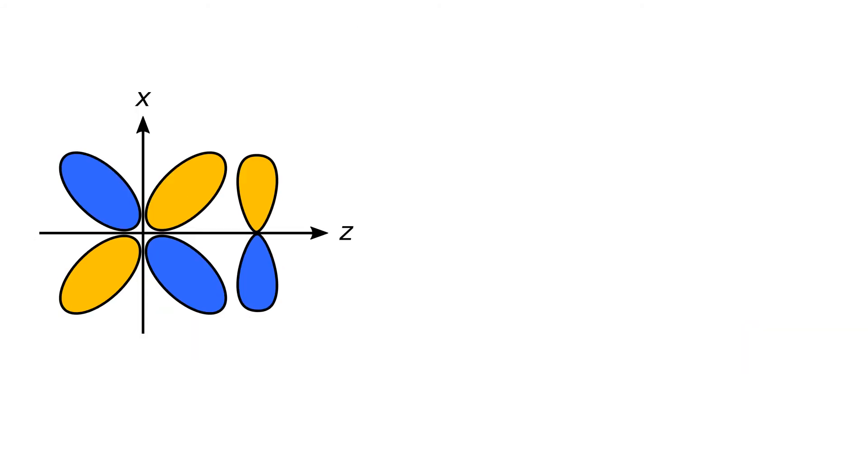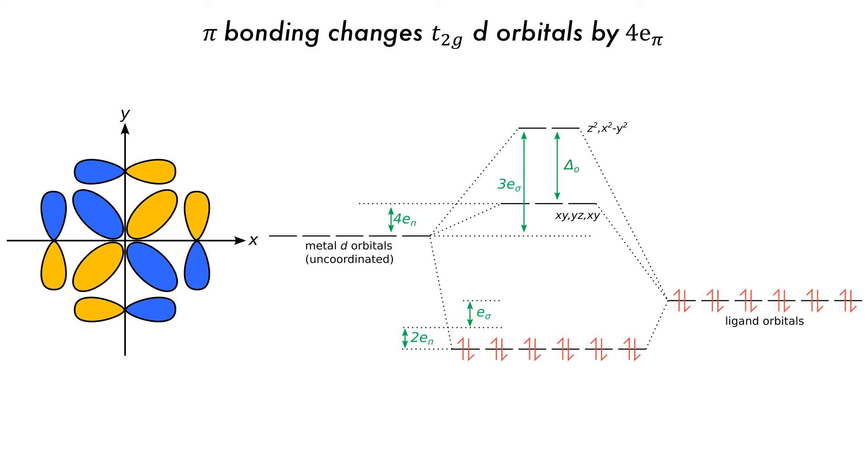Pi-donor ligands are treated similarly to the pi-acceptor case, but with the energy signs reversed. This means that molecular orbitals with high d-orbital contribution are raised in energy, whereas the molecular orbitals with high ligand p-donor orbital character are lowered in energy. Pi-donor ligands are destabilized by their interactions, and so delta-O is equal to 3 e-sigma minus 4 e-pi.